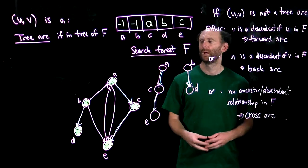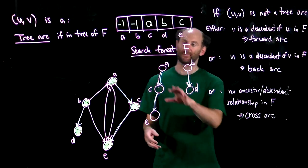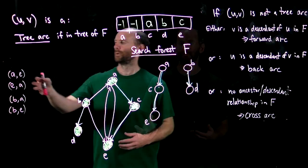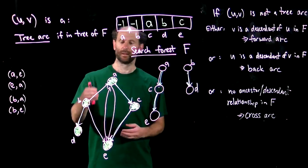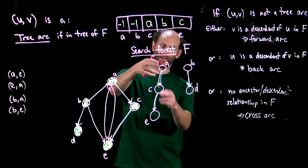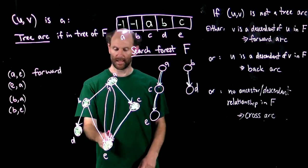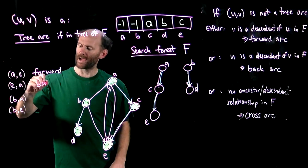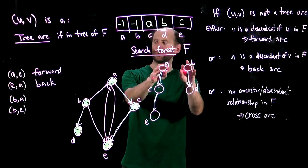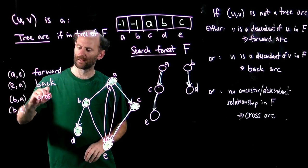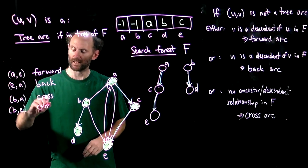Let's return to our example and classify each arc. The arcs colored blue are tree arcs, as they're in the search forest. Of the remaining four arcs — AE, EA, BA, and BE — arc AE: since E is a descendant of A in the first tree, AE is a forward arc. Arc EA: the reverse situation, so EA is a back arc. Arc BA: B and A are in different trees with no ancestor-descendant relationship, so BA is a cross arc. Similarly, BE is also a cross arc since B and E are not even in the same tree.